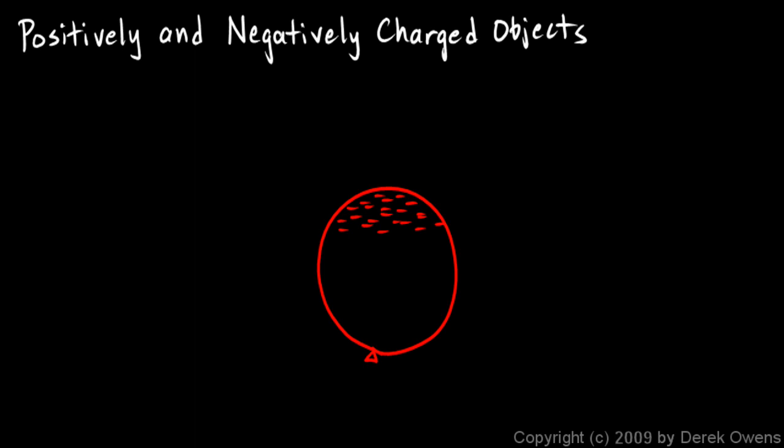And you wouldn't expect that to be the case, because a positive charge or a negative charge would have no attraction or repulsion to a neutral object. A proton and a neutron don't attract or repel, and an electron and a neutron don't attract or repel. So, a charged object, we wouldn't necessarily expect it to have any attraction to a neutral object.